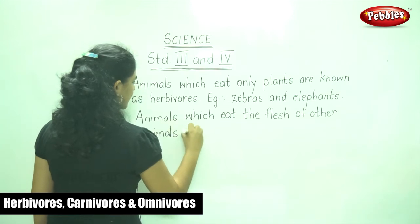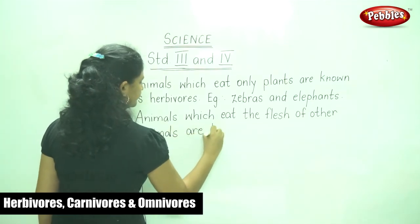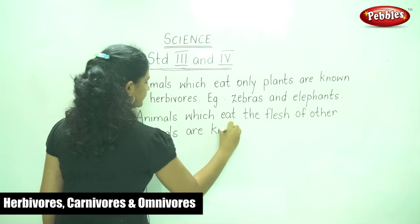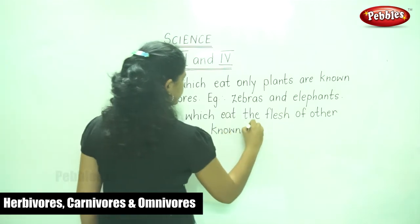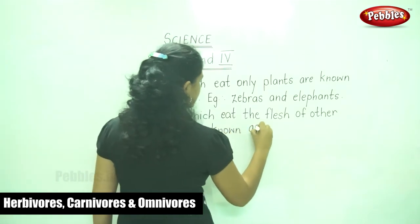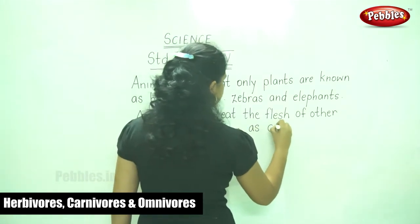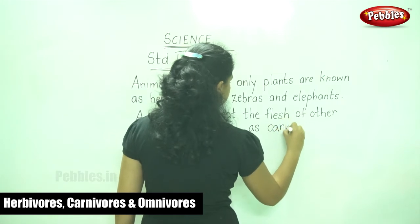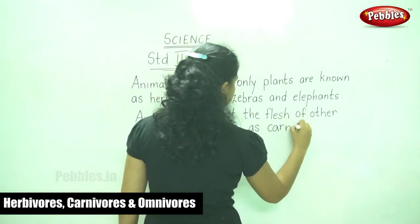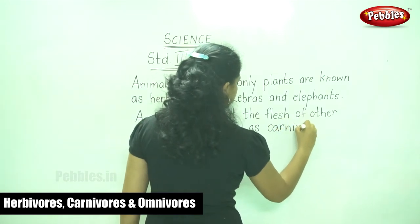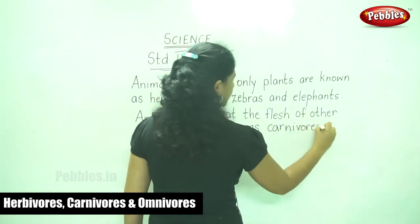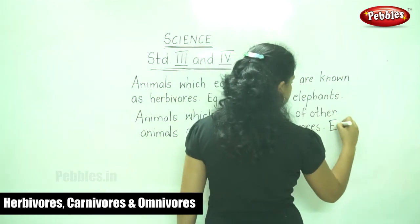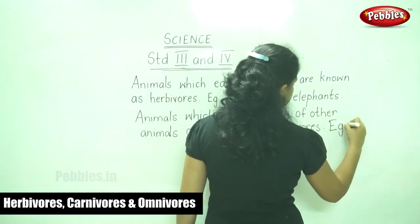Animals which eat the flesh of other animals are known as carnivores. Examples are lion, tiger, etc.